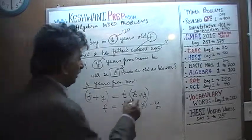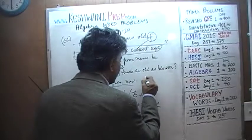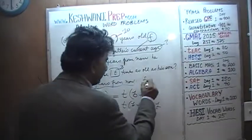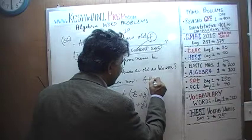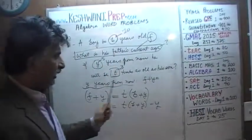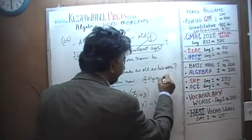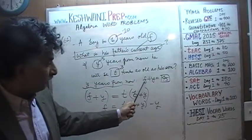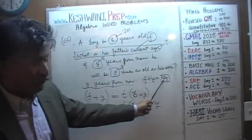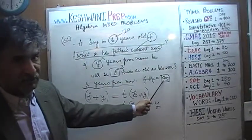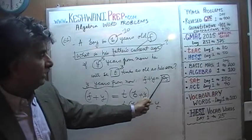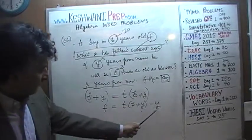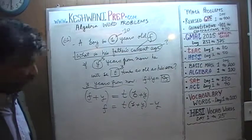Y years from now — five years from now — the father's age F plus Y is going to be 45. Therefore, if the father is going to be 45 years of age five years from now, then today he has to be 40. This F has to be 40. Does this answer give us 40? Let's find out.